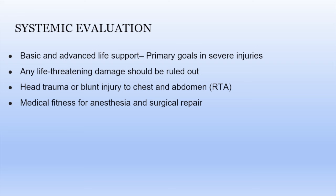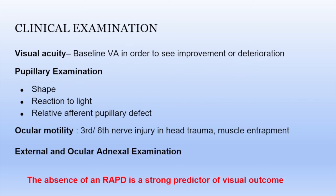Systemic evaluation is the first priority — we must ensure there is no life-threatening damage before examining the eye. Any life-threatening injury should be ruled out, especially head trauma and blunt trauma to chest and abdomen. Medical fitness for anesthesia and surgery must be obtained. For clinical evaluation, visual acuity and pupillary examination (particularly RAPD) are key. A peaking pupil may indicate an occult injury. Ocular motility assessment reveals nerve involvement or muscle entrapment, and external and adnexal examination identifies associated injuries. Absence of RAPD is a strong predictor of good visual outcome.